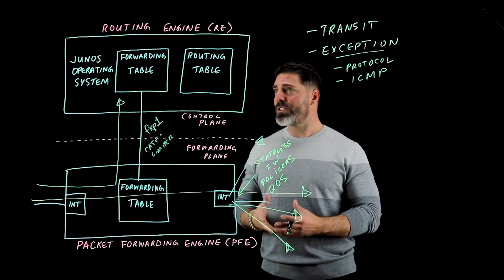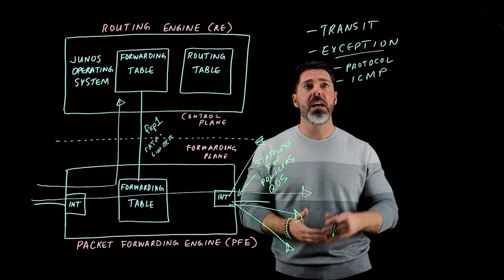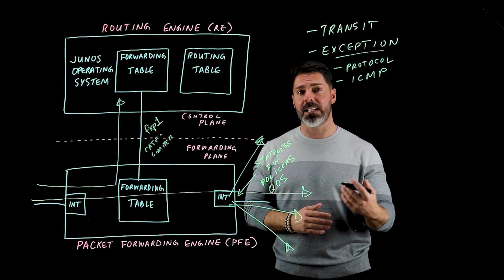That's pretty much it. That sort of covers the routing engine, the packet forwarding engine, transit traffic as well as exception traffic.